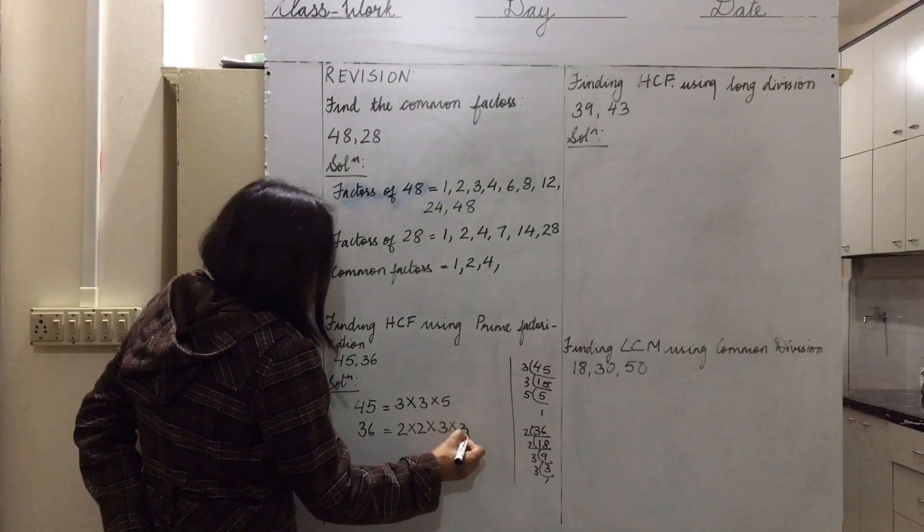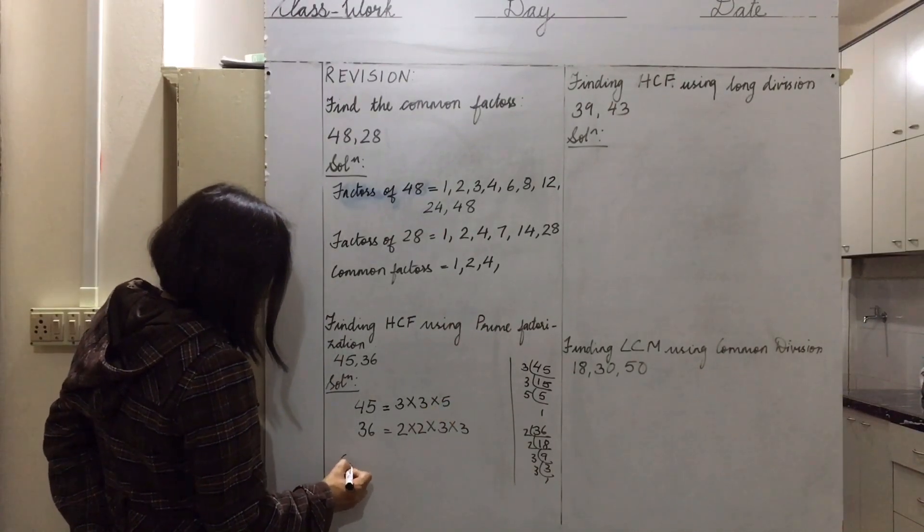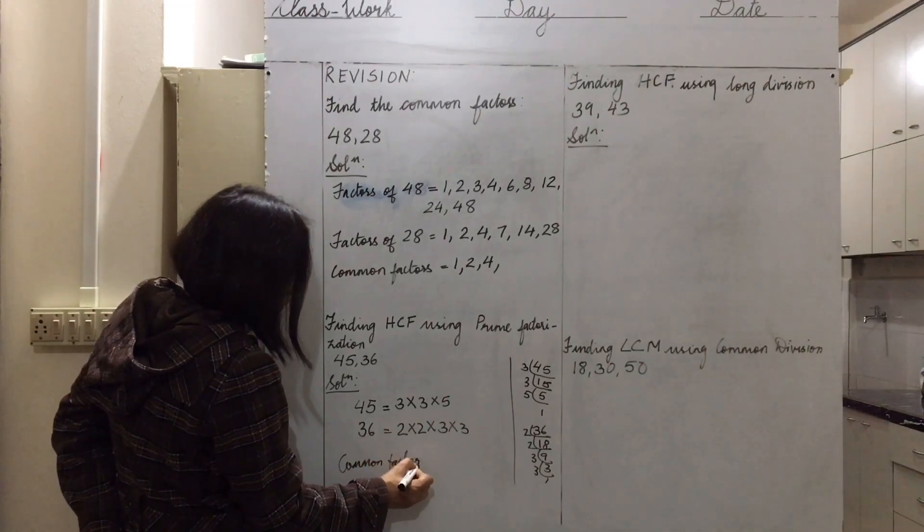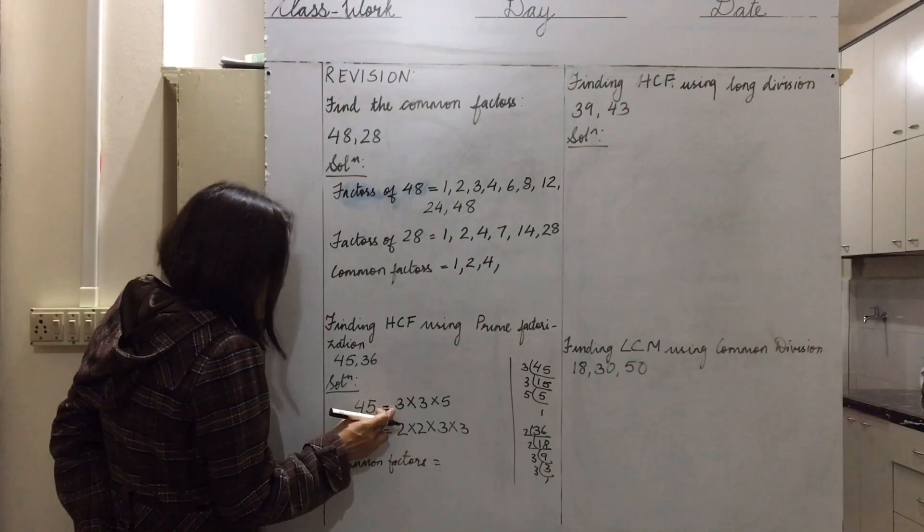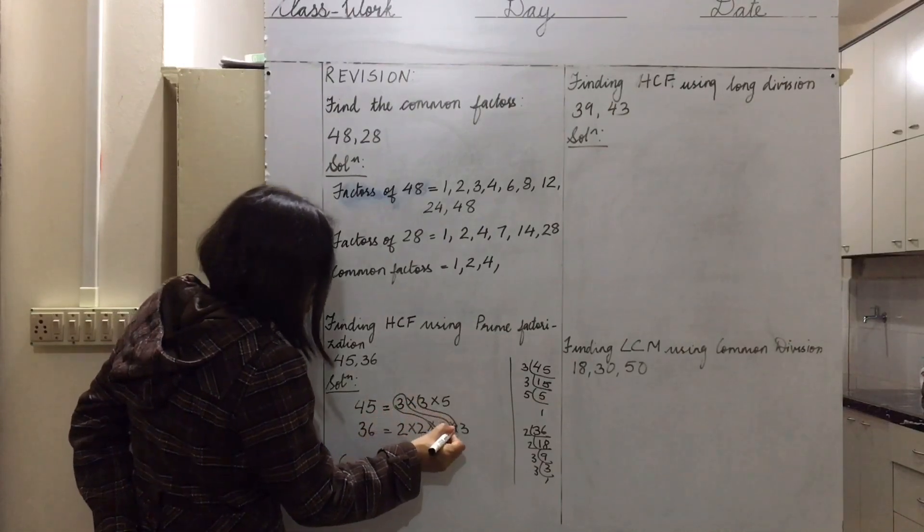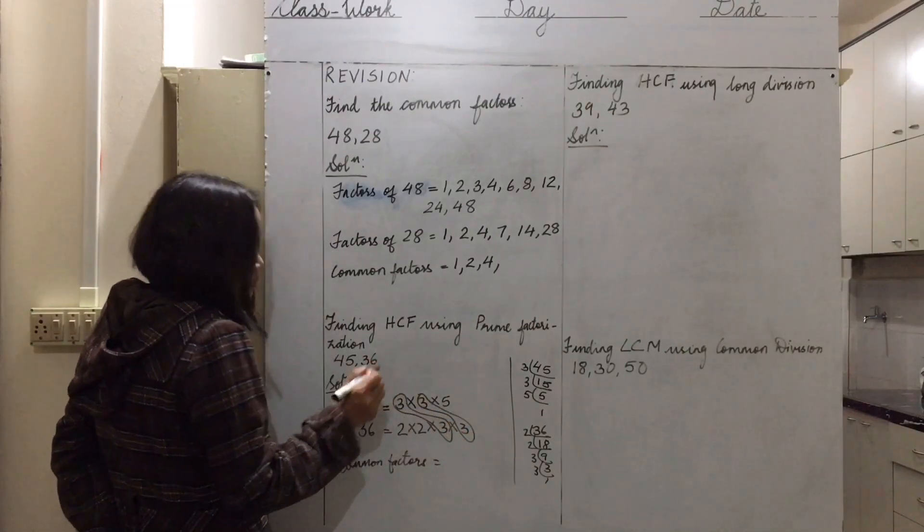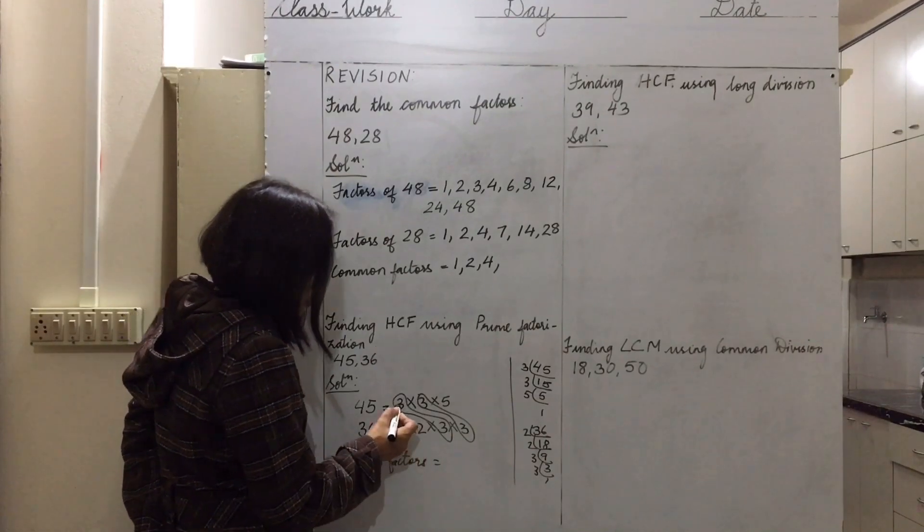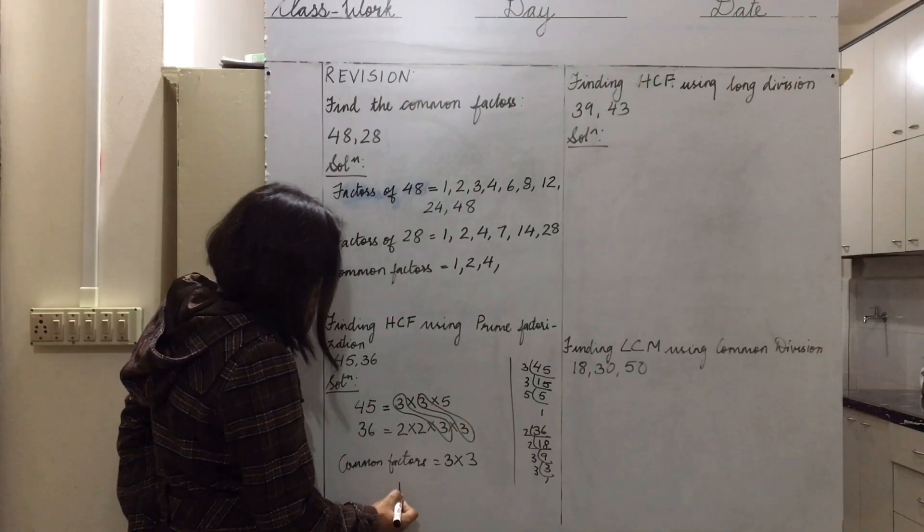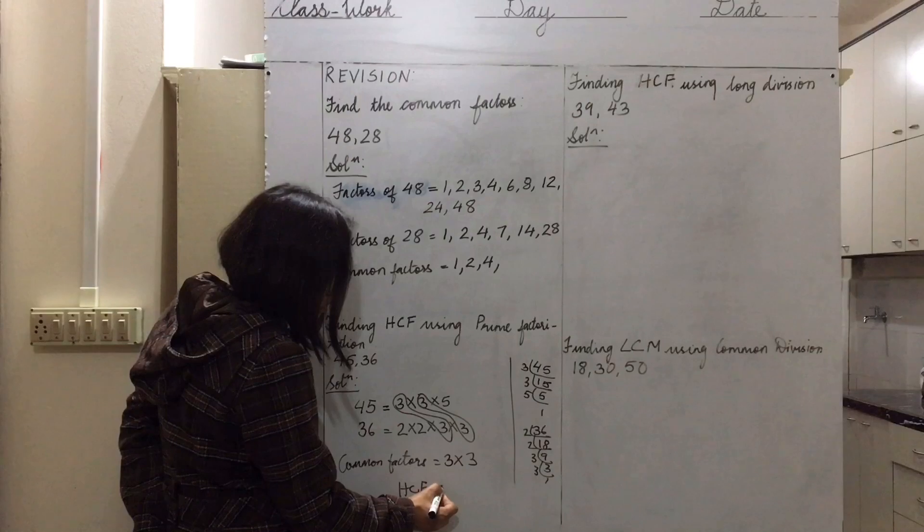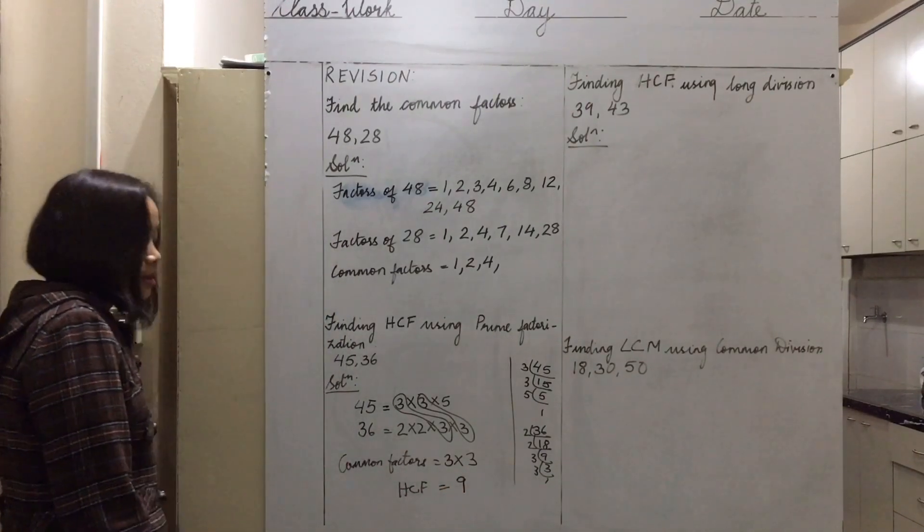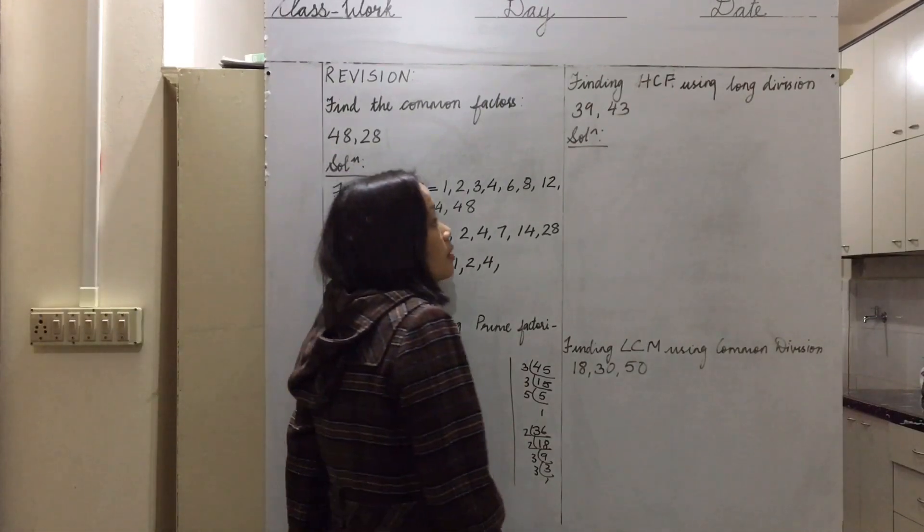We prime factorize 36: 2 times 18, 2 times 9, 3 times 3. That's 2 times 2 times 3 times 3. Now we find the common factors: 3 and 3. For this pair we take 3 one time, so the HCF of these two numbers is 3 times 3, which is 9.